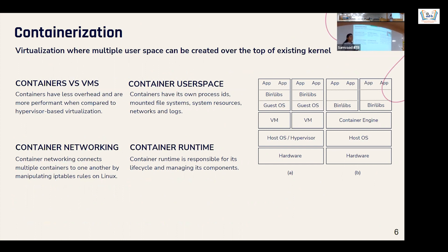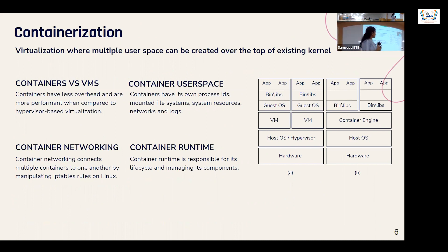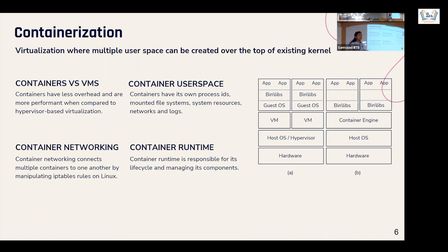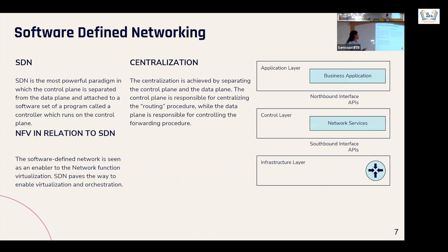We used containers — specifically Docker — which are very lightweight. Unlike a normal hypervisor where you need a guest OS, containers do not require that, making them faster when compared with NFV approaches. We also used SDN — software-defined networking — for traffic routing. Traditional networking has no rerouting capability, but SDN allows us to reroute, program flows, record history, and manage the network programmatically.